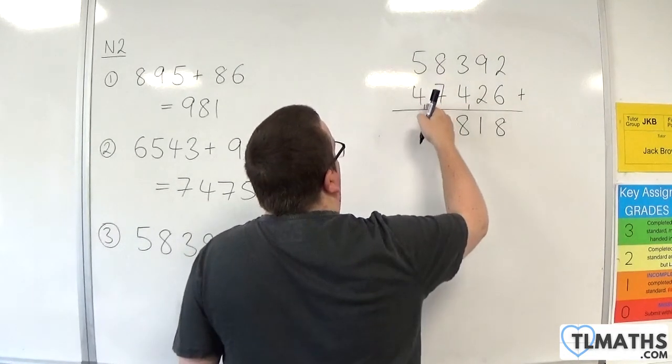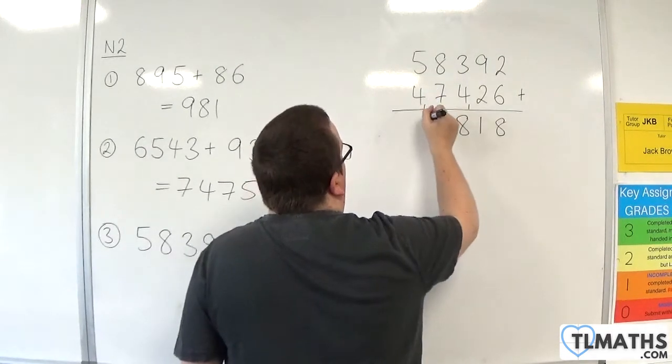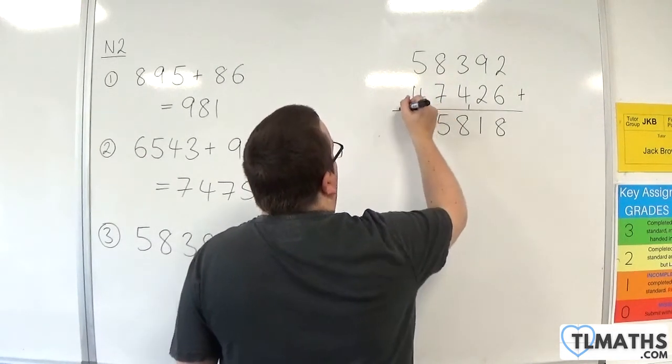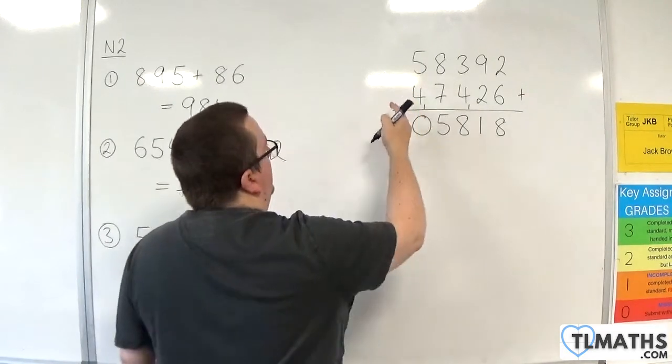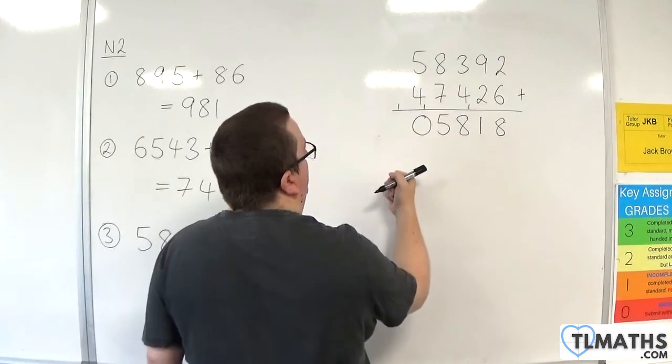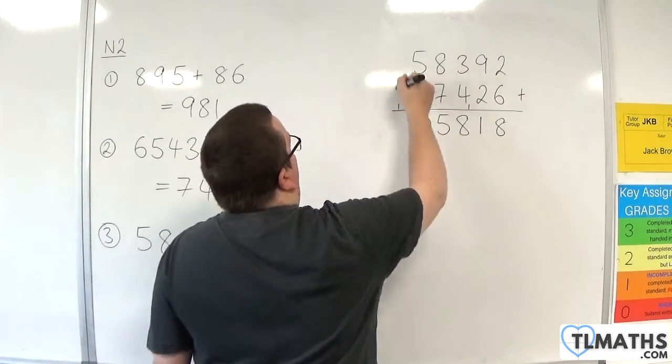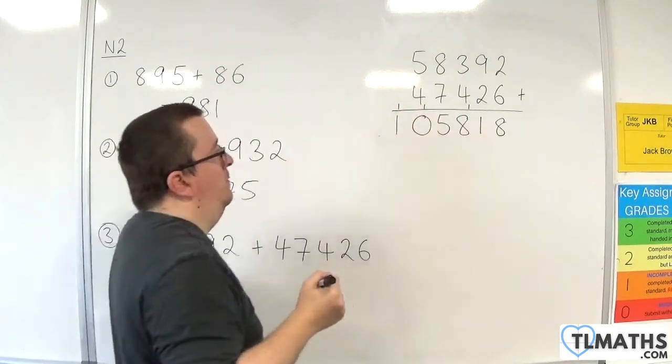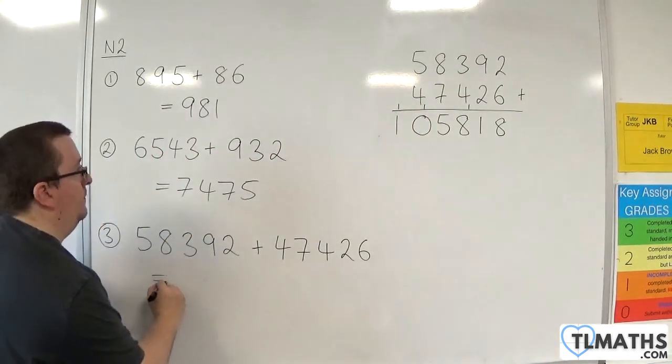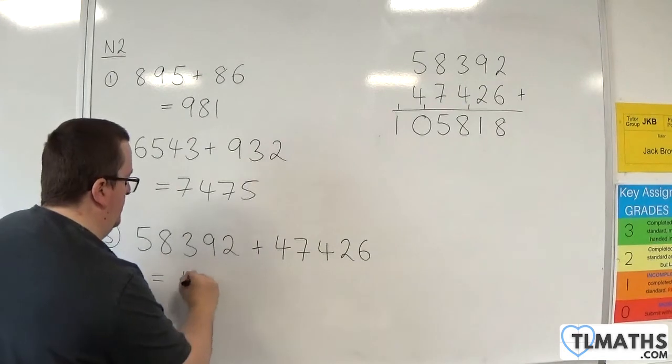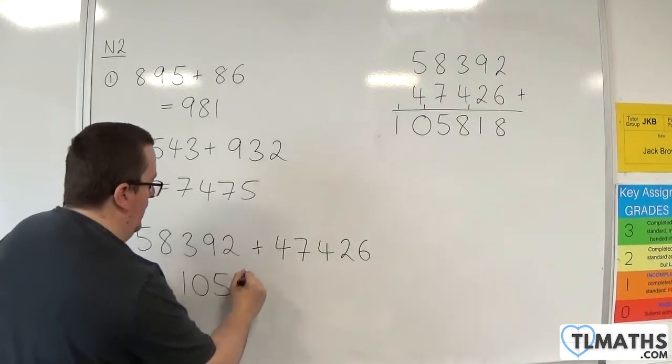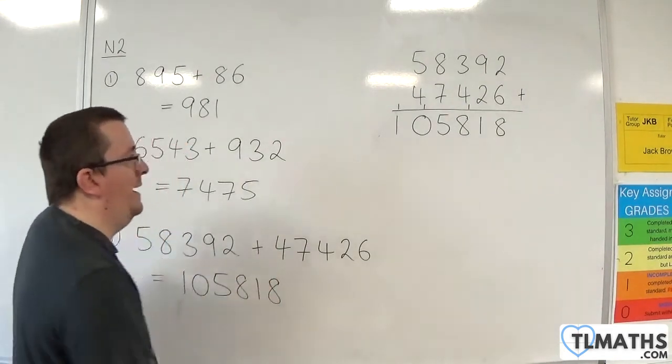5 plus 4 is 9, plus the 1 is 10. So we put down the 0, and essentially you're carrying the 1, but there's nothing left to write there. You can put the 1 there if you like. But we've got 0 plus 1, which is just 1. And so our answer is 105,818.